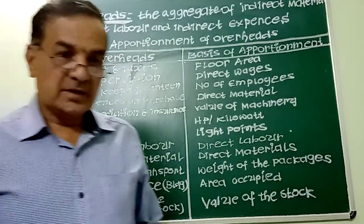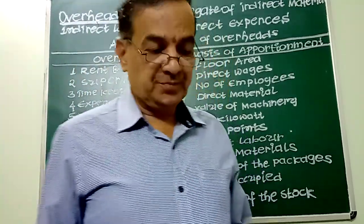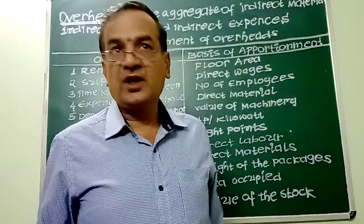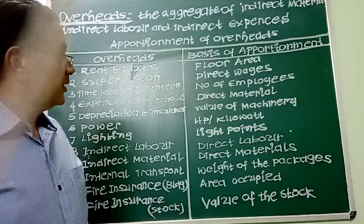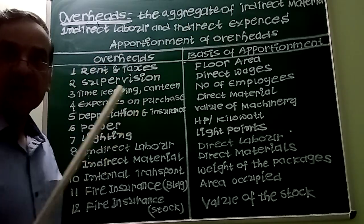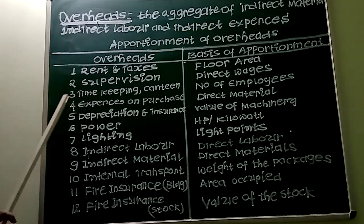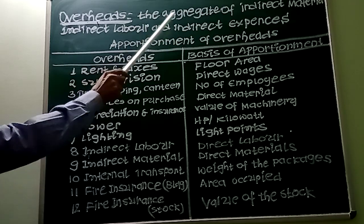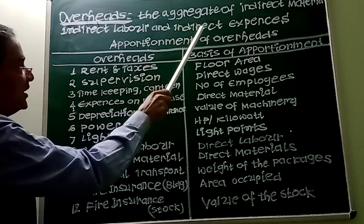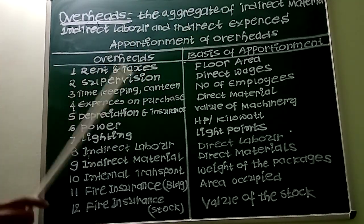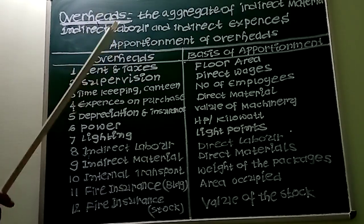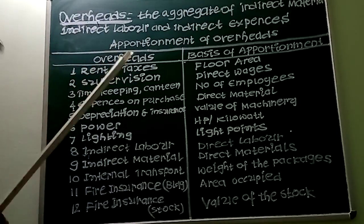My dear students, today's topic of discussion is Unit 4: Overheads Cost Control. Let us try to understand the actual meaning of overheads. Overheads can be defined as the aggregate of indirect material, indirect labour, and indirect expenses. That means: overheads = indirect material + indirect labour + indirect expenses.